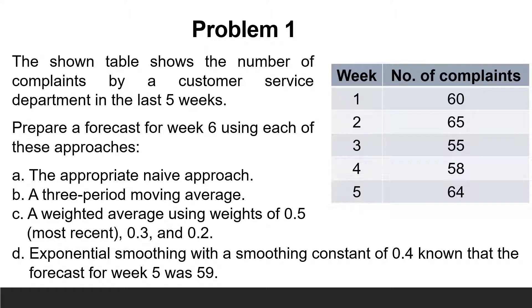Recalling the six basic steps to make a forecast explained in the first video of this series: the first step is to determine the purpose of the forecast, which is out of scope for this problem-solving exercise. The second step is to establish a time horizon, which is given here as weekly. The third step is to obtain, clean, and analyze appropriate data. The data is already given; we need to plot them to check if they have a trend or vary around an average value.